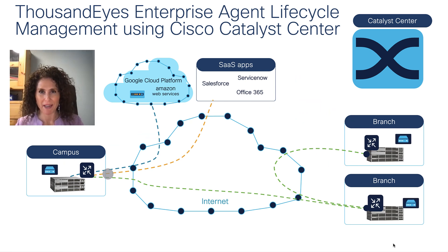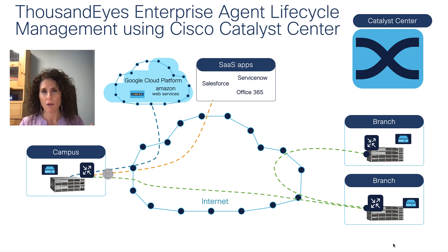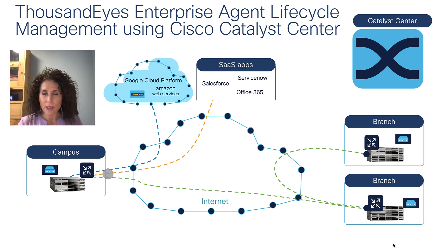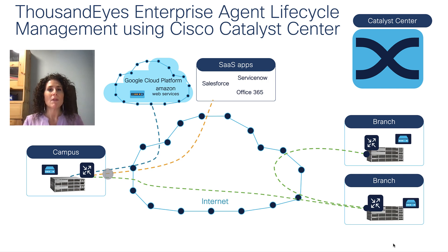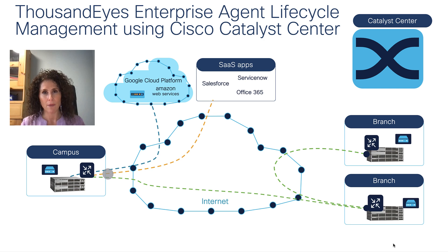So what does Catalyst Center have to do with it? One of the benefits of Catalyst Center is that it's already managing all your Catalyst 9K switches in your infrastructure. Catalyst Center can also roll out the enterprise agent into your switches. If you have one switch you want to deploy ThousandEyes on, doing it manually is okay — but if you have thousands of switches and maybe a thousand branches and want an agent per branch, that's a lot of heavy lifting.